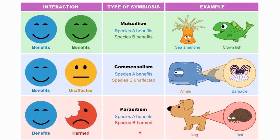Host-parasite relationships are of the following types: symbiosis, commensalism, and parasitism. In symbiosis, both the host and the parasite are dependent upon each other and neither suffers any harm. In commensalism, only the parasite derives benefit without causing injury to the host, and the commensal is capable of living an independent life. In parasitism, the parasite derives benefits while the host is always harmed, and the parasite cannot have an independent life.